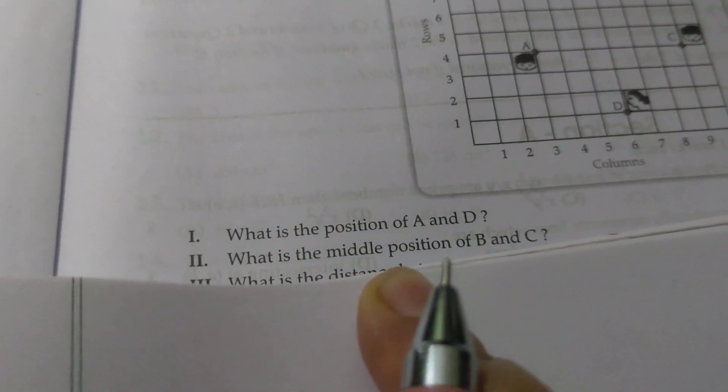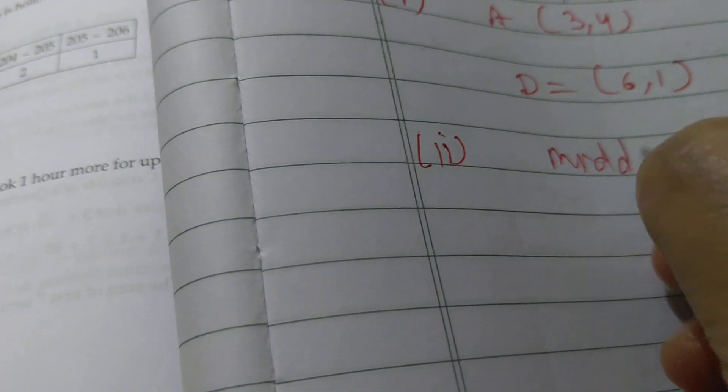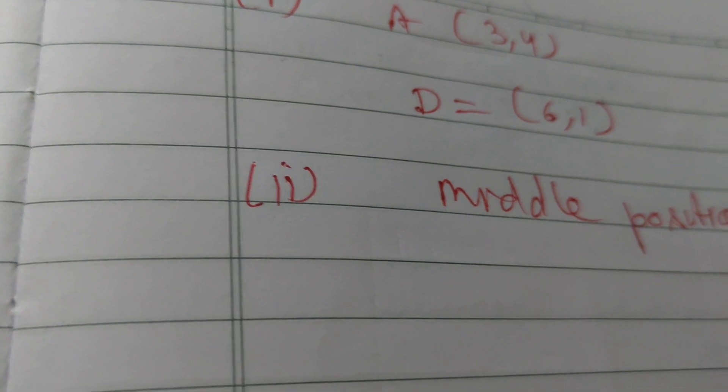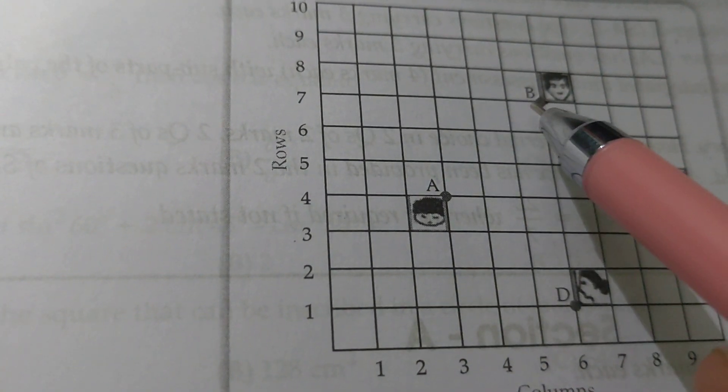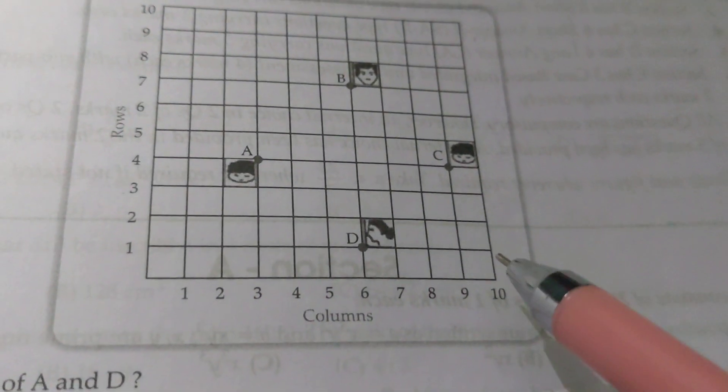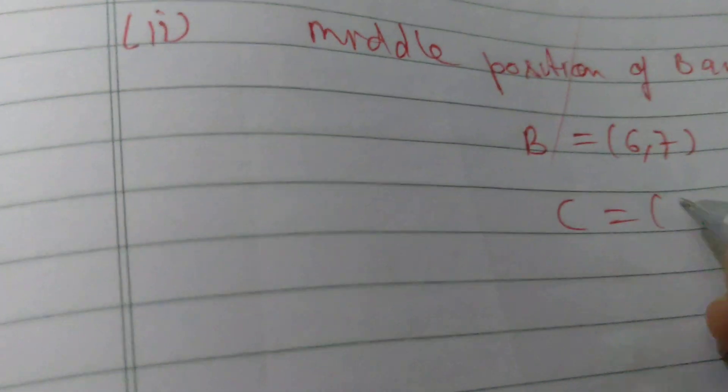Second question me hum se kya pooch raha? What is the middle position of B and C? Dekho, kaisa nikalenge hum? Pehle hum B ke coordinates pata karte hai. B dekho, B kahan pe hai? B yahan pe hai. Ye 6 me ja raha hai, to x to ho gaya 6, aur y kya ho gaya, 7. To B ke coordinates 6, 7. Ab humko chahiye C ke coordinates. C kahan pe hai, ye hai. X-axis ye kahan 9, ye ho gaya 9, aur ye 4. To C ka ho gaya 9 and 4.